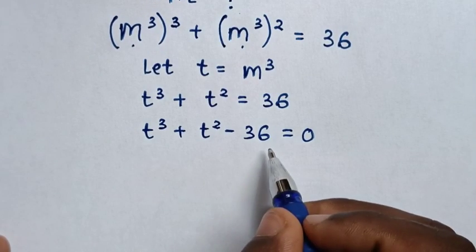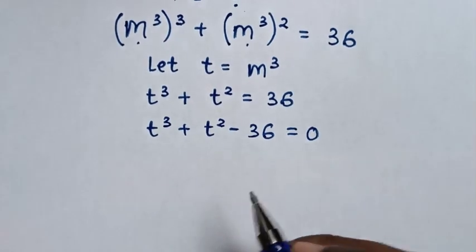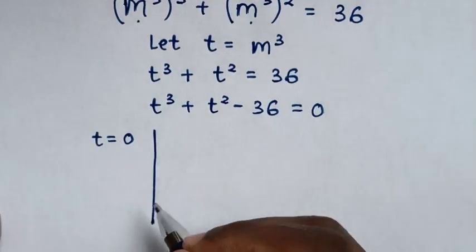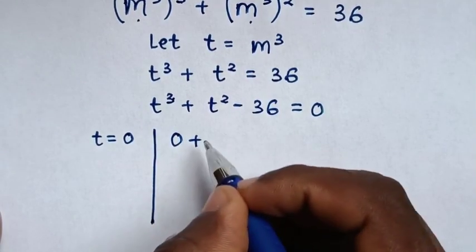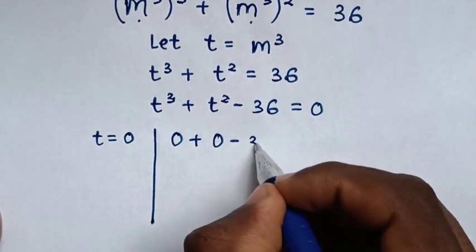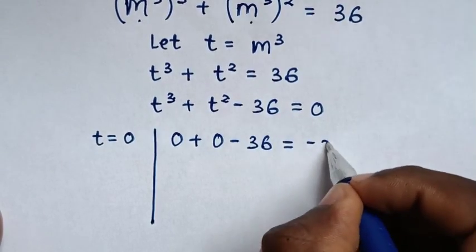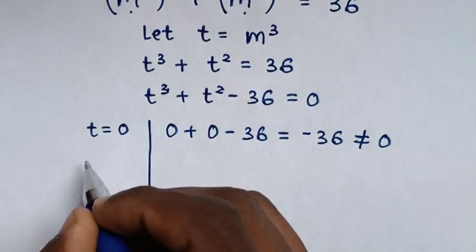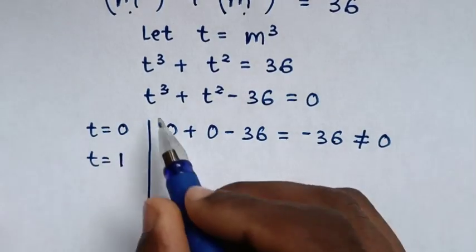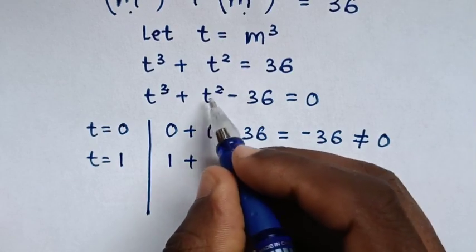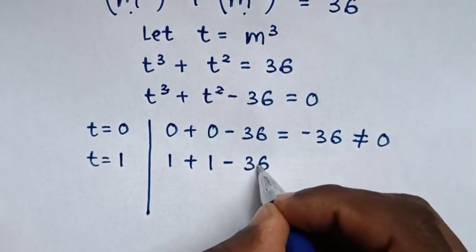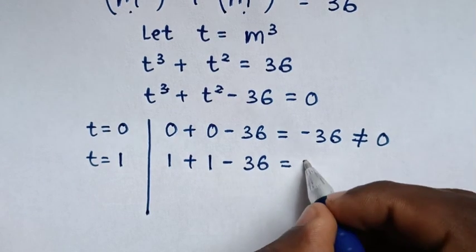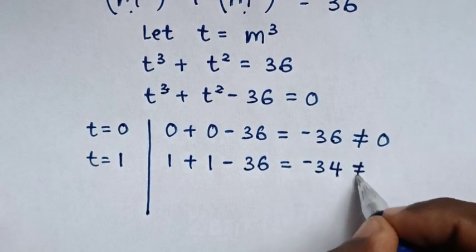Then we will solve this cubic equation by factor theorem and remainder theorem. Starting to check with t is equal to 0: 0 power 3 is 0, plus 0 power 2 is 0, minus 36 is equal to negative 36, which is not equal to 0. Then we will check with t is equal to 1: 1 power 3 is 1 plus 1 power 2 is 1 minus 36 equals 2 minus 36, which is negative 34, not equal to 0.